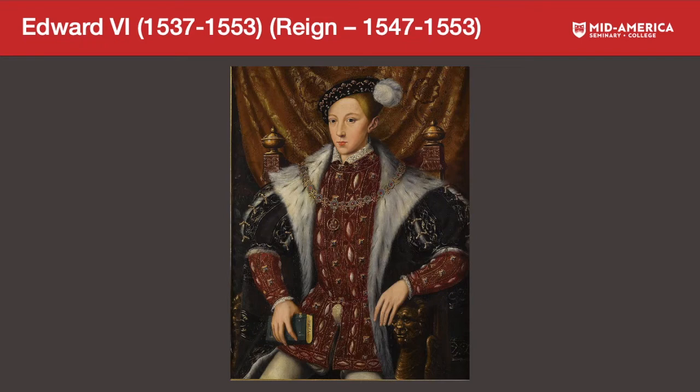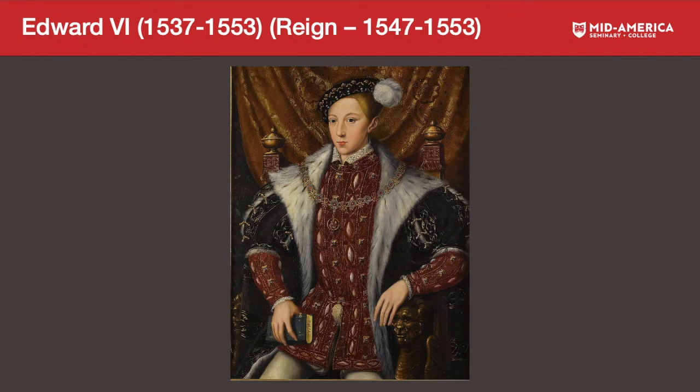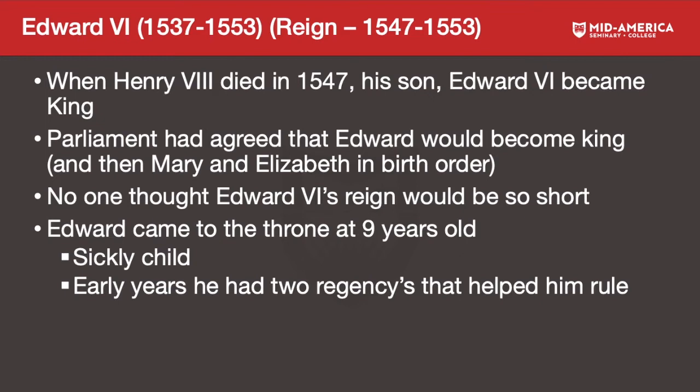We continue our look at the English Reformation through the Tudor line. Henry the Eighth finally had a male heir, Edward the Sixth, born in 1537, who died in 1553. His reign was 1547 to 1553 — very young. Henry the Eighth died in 1547 and his son Edward the Sixth became king.